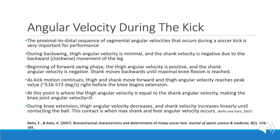At the beginning of the forward swing phase, the thigh's angular velocity is positive and the shank's angular velocity is negative. The shank moves backwards until maximal knee flexion is reached, then as the kick motion continues, both the thigh and shank move forward. The thigh's angular velocity reaches its peak value of around 516 to 573 degrees per second right before the knee begins its extension. At this point, the thigh's angular velocity equals the shank's angular velocity, making the total knee joint angular velocity zero. During knee extension, the thigh's angular velocity decreases and the shank's angular velocity increases linearly until ball contact, at which point maximum shank and foot angular velocity is reached.